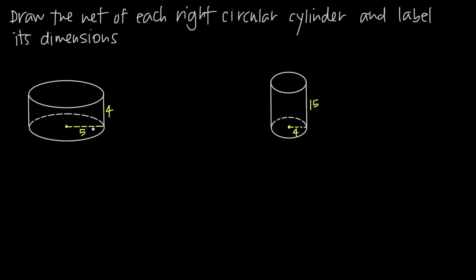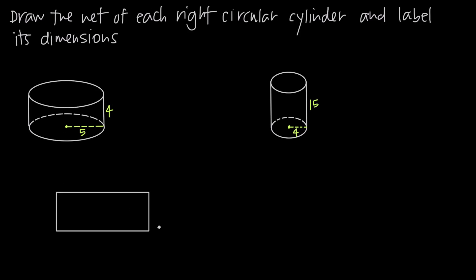So how do we draw the net for this? The net for a right circular cylinder is always going to look roughly the same. We're going to have a rectangle that represents the side of the cylinder. If we go ahead and draw a rectangle, we know the height of that rectangle is going to be four, because we've already been told that the height is four. If we wrap it around on itself to form a cylinder without a top and without a bottom, this can represent the side of the cylinder.